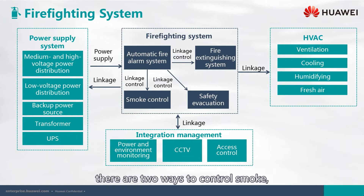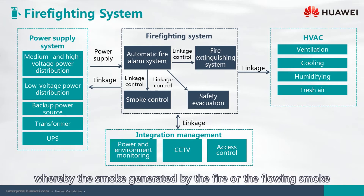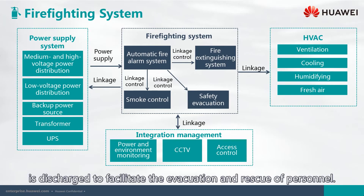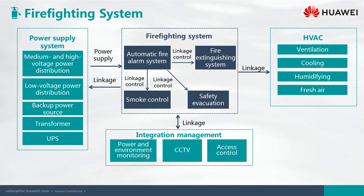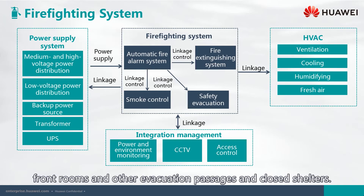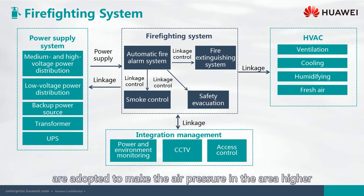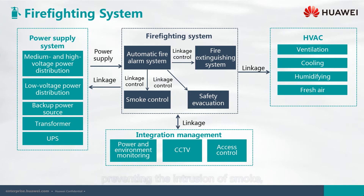There are two ways to control smoke: smoke exhaustion and smoke prevention. Smoke exhaustion is mainly for the fire area, whereby the smoke generated by the fire or the flowing smoke is discharged to facilitate the evacuation and rescue of personnel. Smoke prevention is mainly for non-fire areas, especially stairwells, front rooms, and other evacuation passages and closed shelters. Mechanical air pressure supply and smoke prevention measures are adopted to make the air pressure in the area higher than the air pressure in the fire area, preventing the intrusion of smoke and controlling the spread of fire.